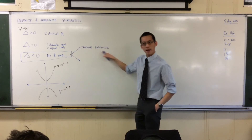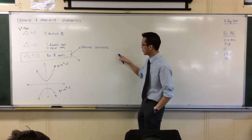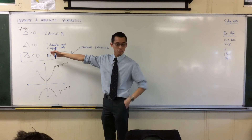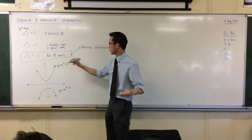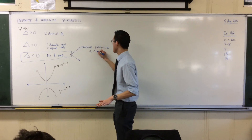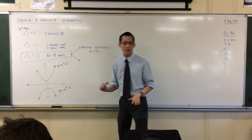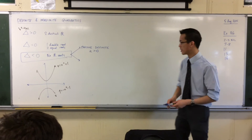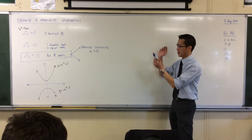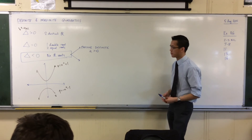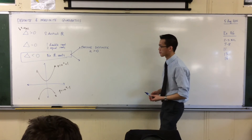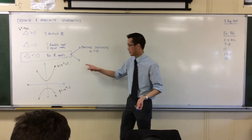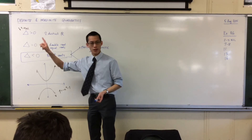So in order to get a positive definite quadratic, you want the discriminant to be negative — no roots — and you want the leading coefficient, which is the coefficient attached to the x squared term, the highest power of x, to be positive. That makes it concave up.